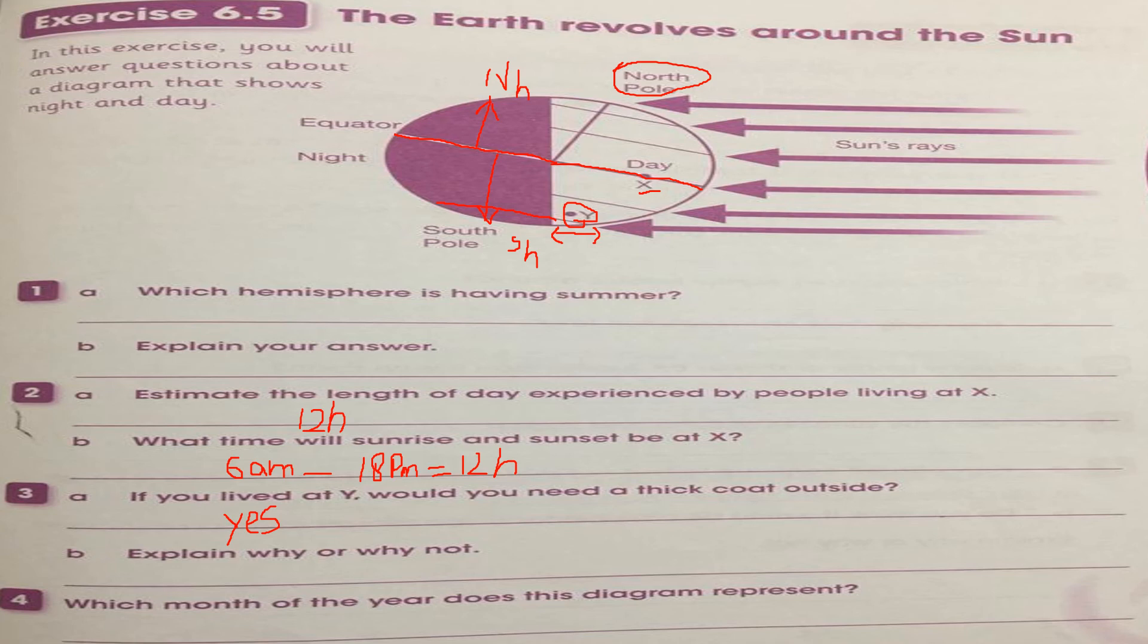The night is bigger here. So which month of the year does this diagram represent? In your book also, when you saw the picture, when the North Pole is tilted towards the sun, it means it's summer. It shows the summer, and the month of summer is June.